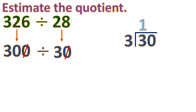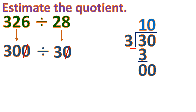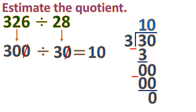30 divided by 3: 3 divided by 3 is 1 because 1 times 3 is 3. Subtract — 3 minus 3 is 0. Bring down 0; 0 divided by 3 is 0. Subtract — 0 minus 0 is 0. No more digits to bring down. The quotient is 10. So 326 divided by 28 is approximately equal to 10.